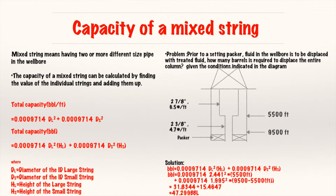Next, let's discuss the capacity of a mixed string. A mixed string means having two or more different-sized pipes in the wellbore. The capacity of a mixed string can be calculated by finding the value of the individual strings and adding them together. We will be using the barrel per fill factor. For a mixed string, you consider the ID of the large string and the ID of the small string to get the barrel per fill factor, then multiply each by their individual heights — height of the large string and height of the small string.